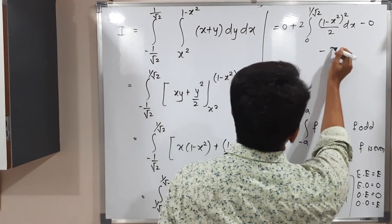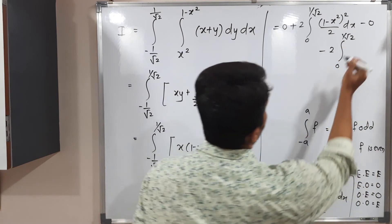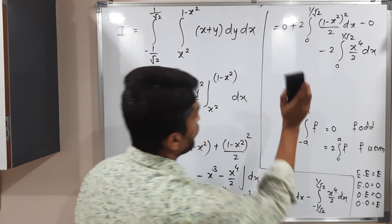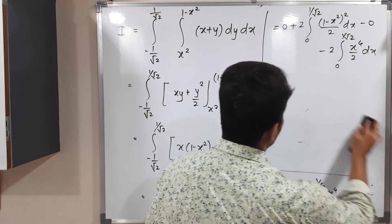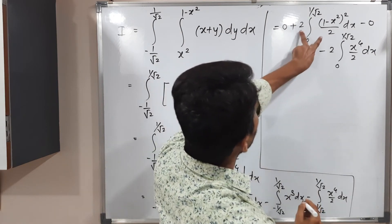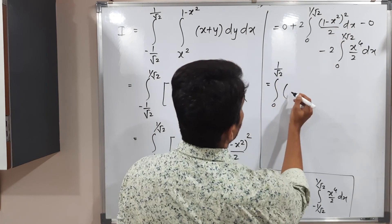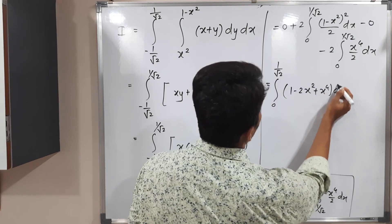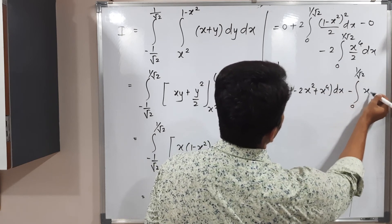After the 2s cancel: we get ∫₀^{1/√2} (1 − x²)² dx minus ∫₀^{1/√2} x⁴ dx. Expanding (1 − x²)² using the (a − b)² formula gives 1 − 2x² + x⁴. The x⁴ terms cancel with the second integral, leaving simply ∫₀^{1/√2} (1 − 2x²) dx.